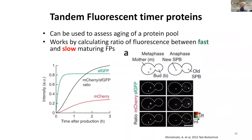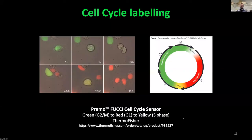IrisFP is both photoconvertible and photoswitchable — once converted from green to red, it can be cycled on and off. These optical highlighters are good for studying protein dynamics and super-resolution techniques. Tandem fluorescent timer proteins are fusions of a fast- and a slow-maturing fluorescent protein; the ratio between the two indicates the age of a protein pool. This is demonstrated in yeast cell division where old spindles appear red and new ones appear green. Cell cycle markers can also exhibit different colors depending on cell cycle stage.